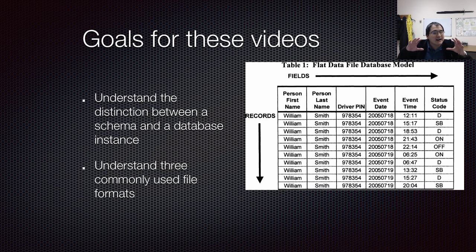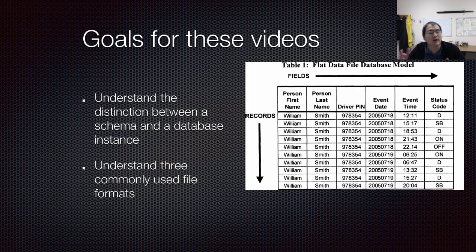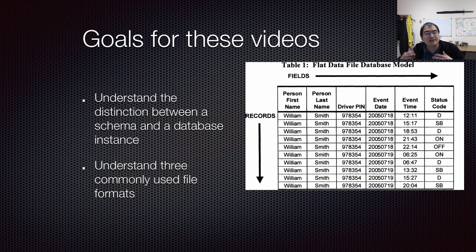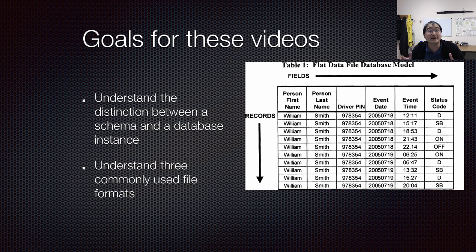An instance is all of the data in a particular database, where a schema specifies what sort of data could be in the database — things like the types, where they're allowed, how many there need to be. I want you to understand how these three different commonly used file formats can have schemas which define and restrict exactly what sorts of data can be in each one.